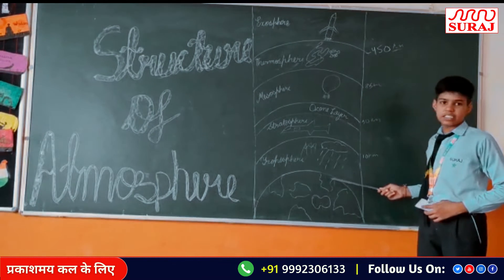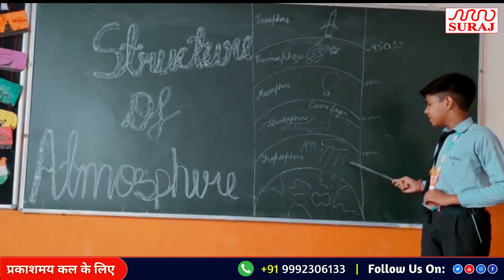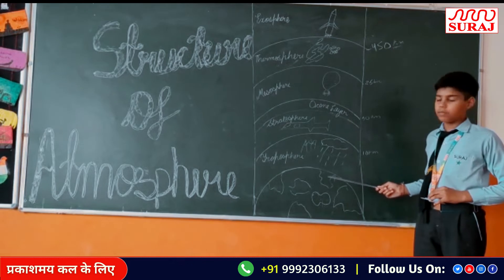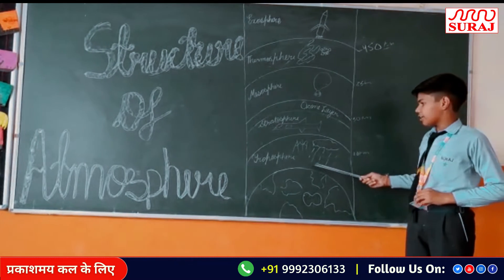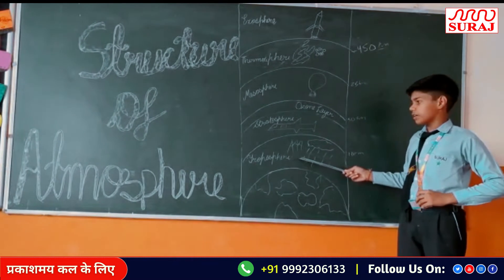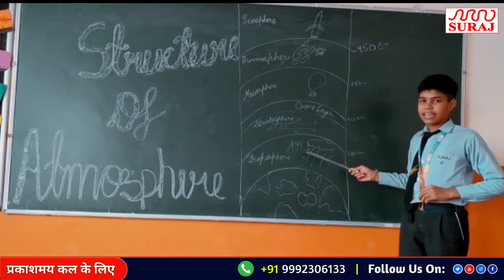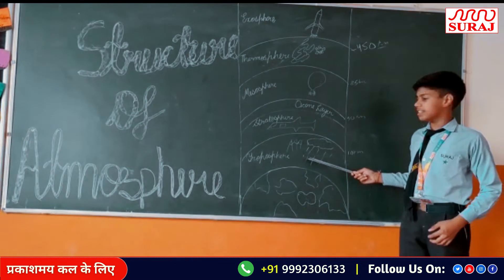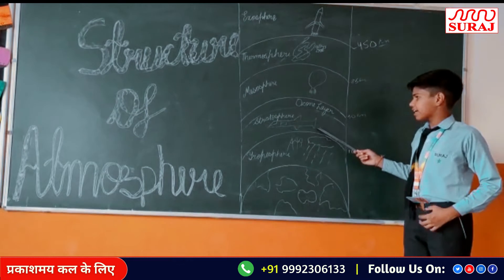Troposphere is the lowest layer of the earth. It is about 9 km from the earth's surface. In this layer, climatic things take place.